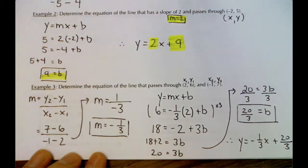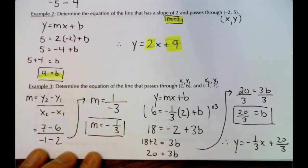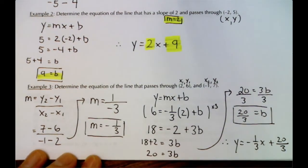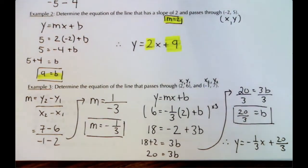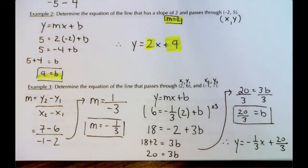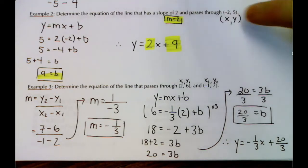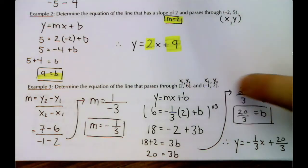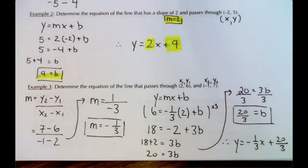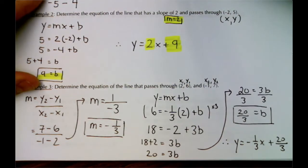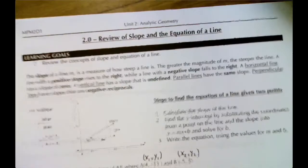From this first section, what we need to be able to do is find the equation of a line whether we're given the slope and a point, or if we're given two points. On to the next page.